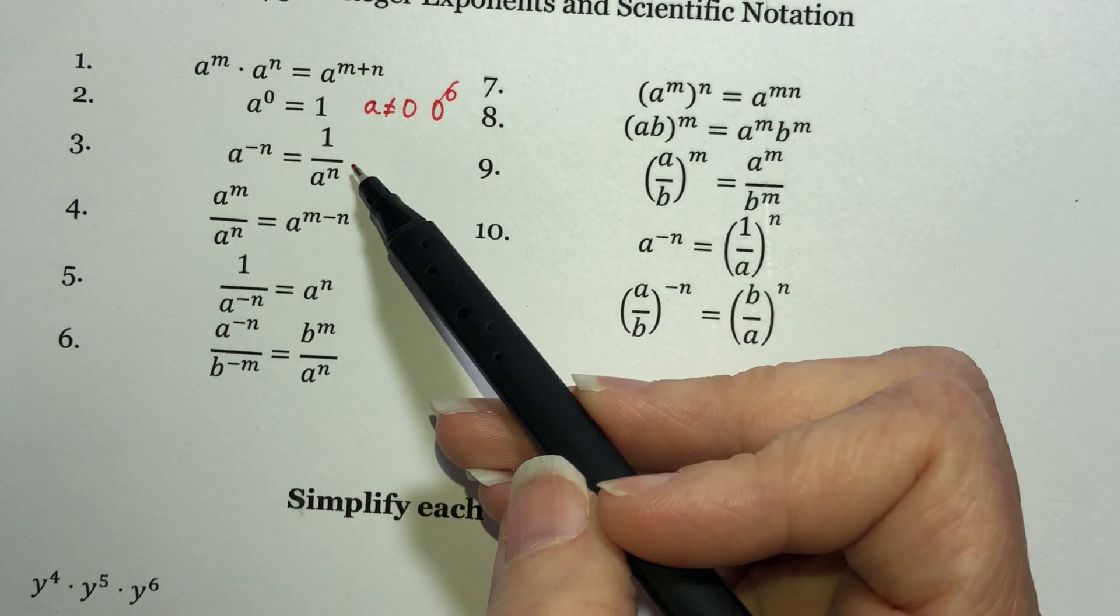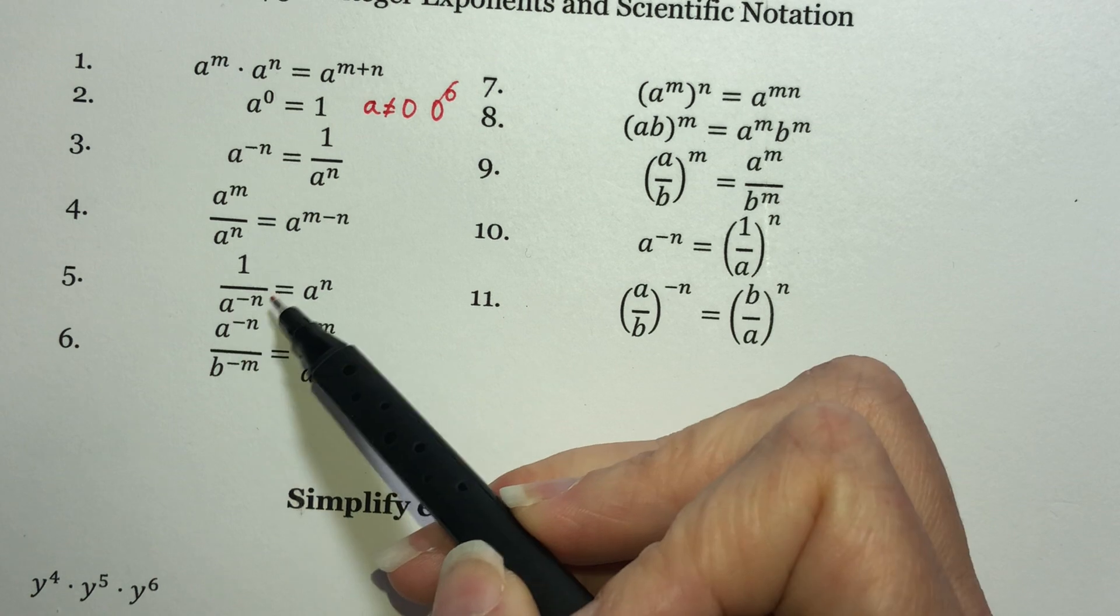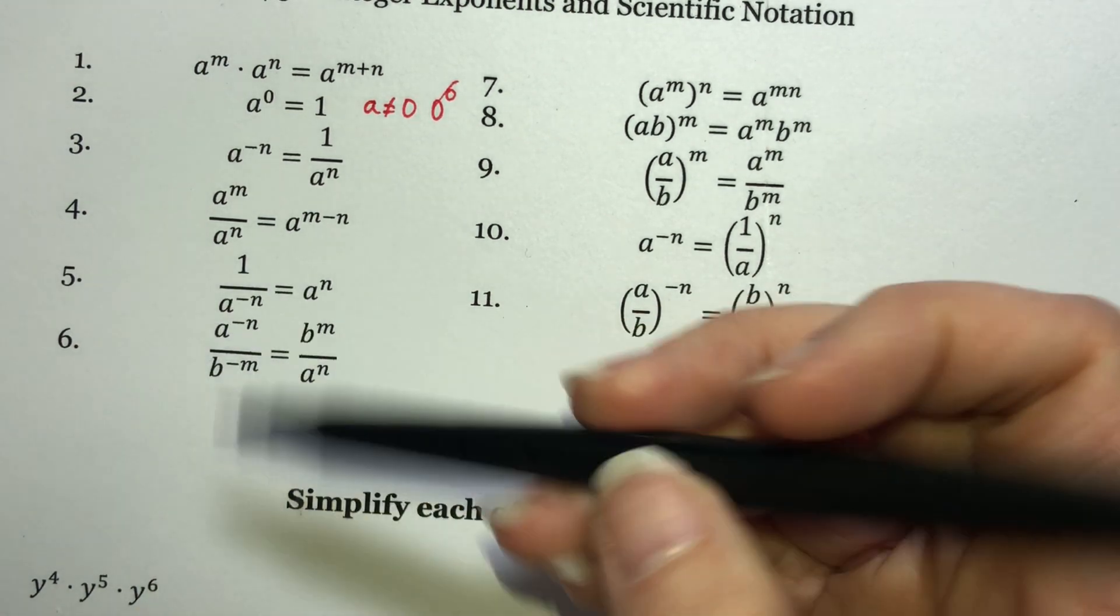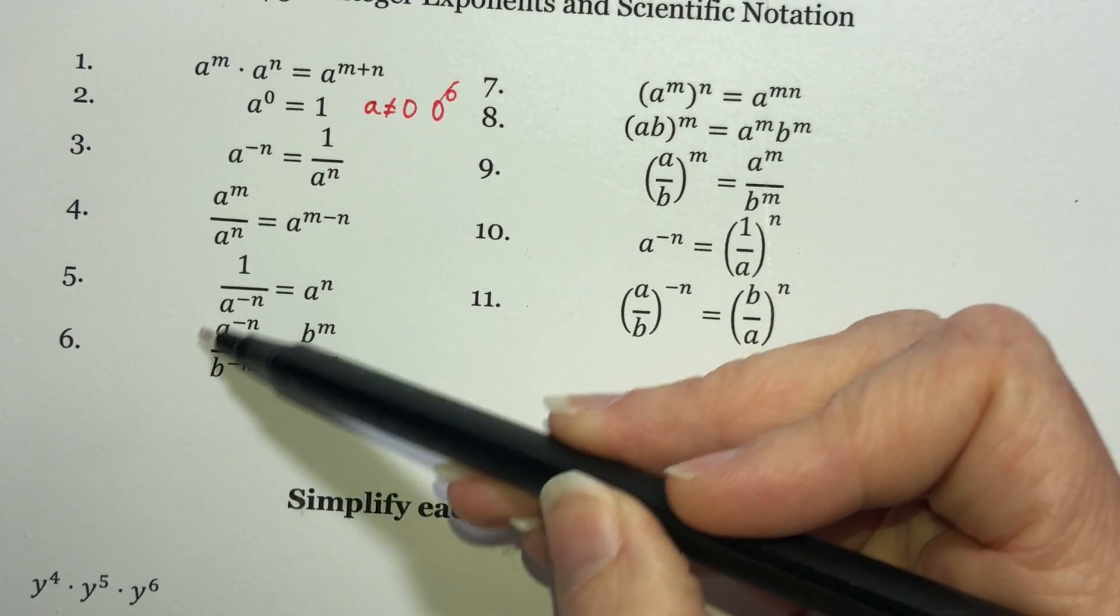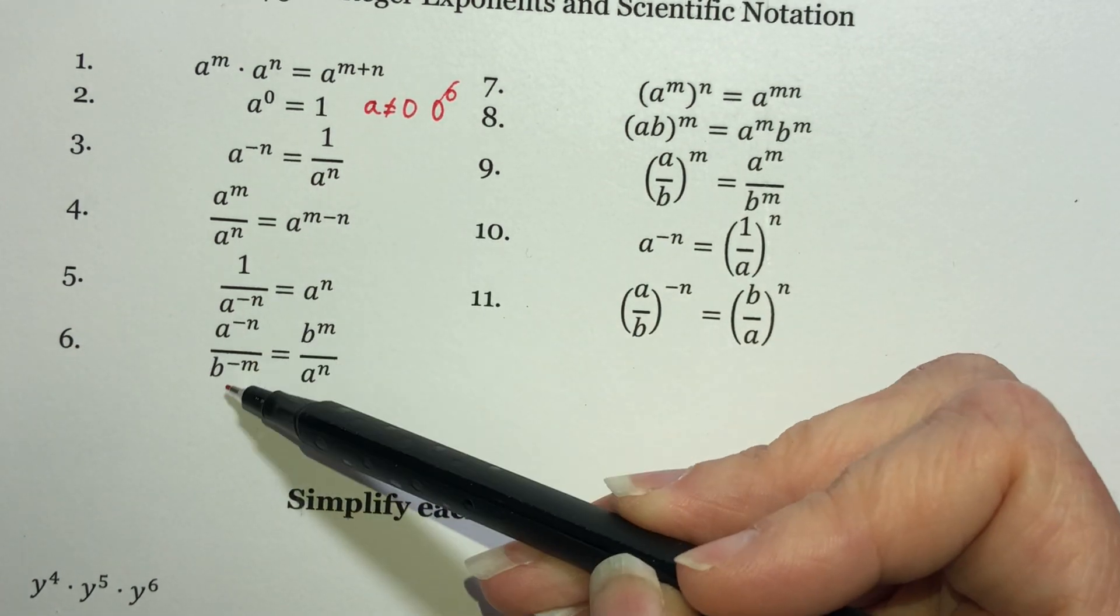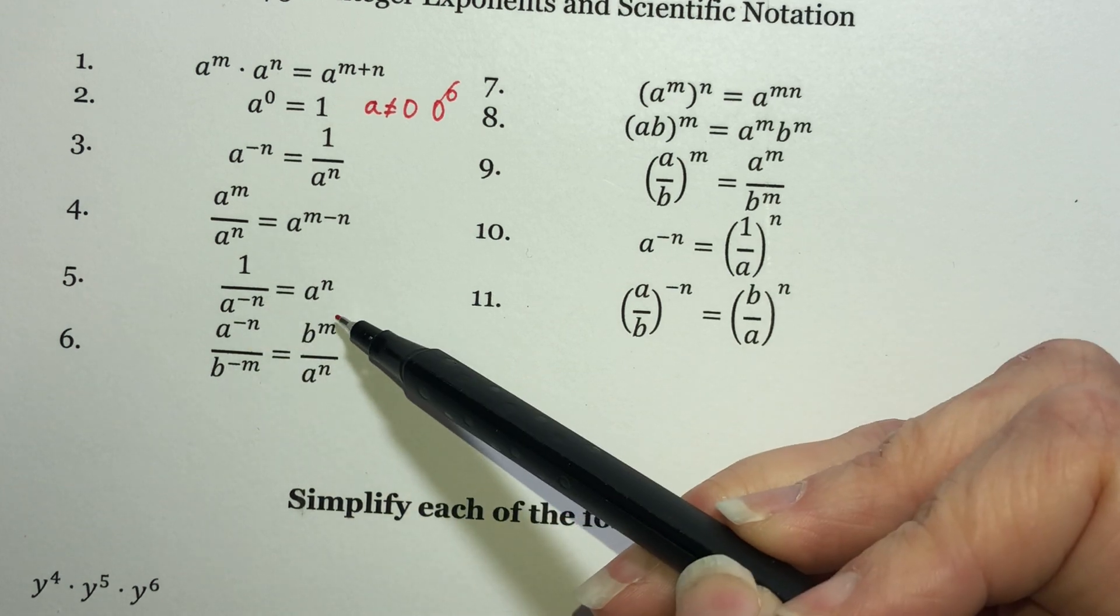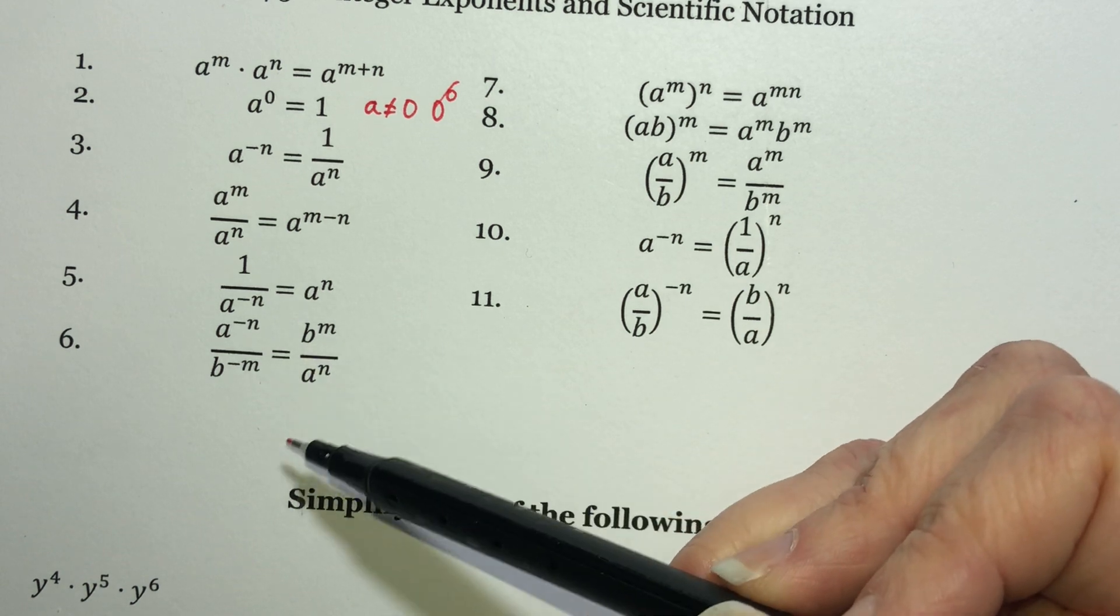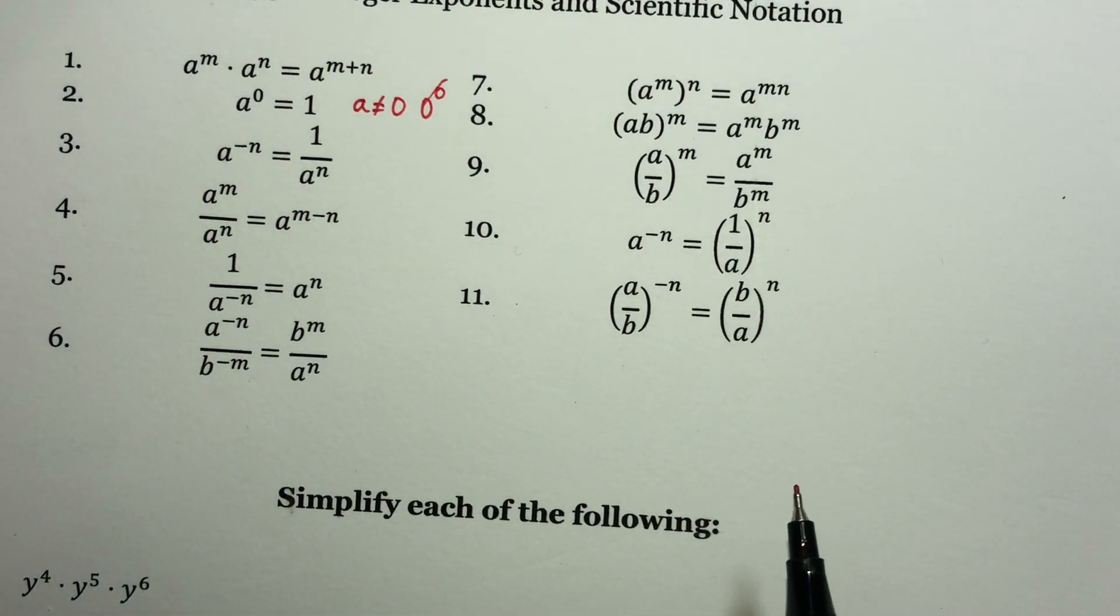Now, property five follows directly from property number three. If you have a negative exponent in the bottom, it's unhappy in the bottom, so you move it to the other side of the fraction bar. Same thing here. Here we're allowed to have different bases, and so we're not really combining these. We don't get to do something like this. But right here, what we do is this one's unhappy, so it moves to the top. This one's unhappy, it moves to the bottom. And then once you move it to the other side of the fraction bar, they are positive exponents.